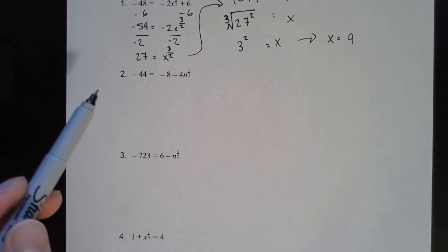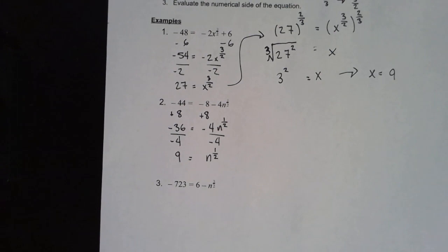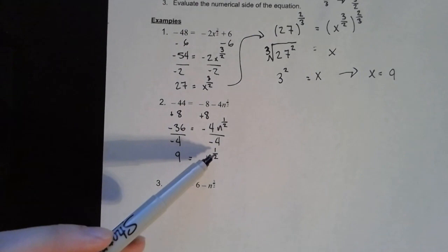For example number 2, we want to isolate n to the 1 half first. So we'll need to add 8 on both sides and divide by negative 4. I added 8 on both sides and negative 4 plus 8 gives negative 36. Then I divided both sides by negative 4 — negative 36 divided by negative 4 is 9. So now I have n to the 1 half power equals 9.